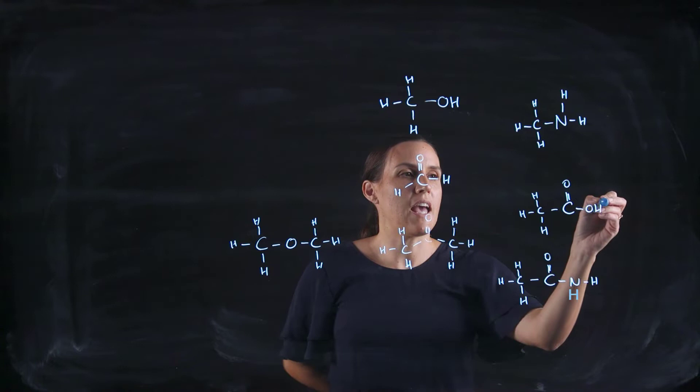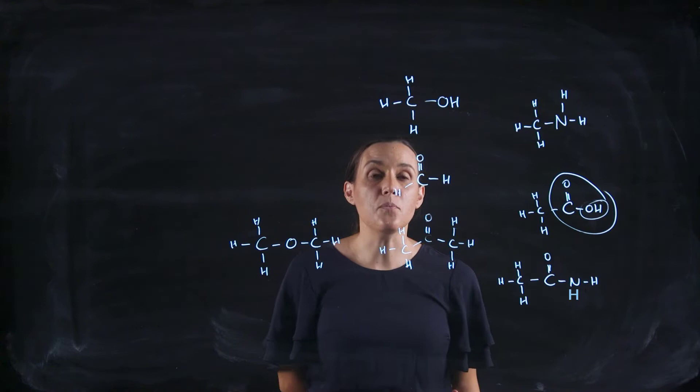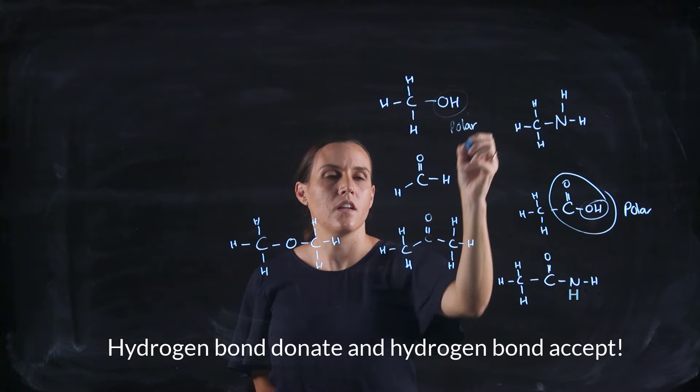So the carboxylic acid is able to hydrogen bond donate and accept, so these are very polar. The alcohol can also donate and accept hydrogen bonds, so it's polar.